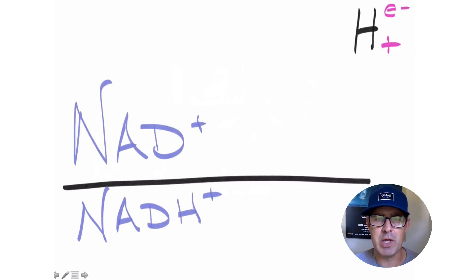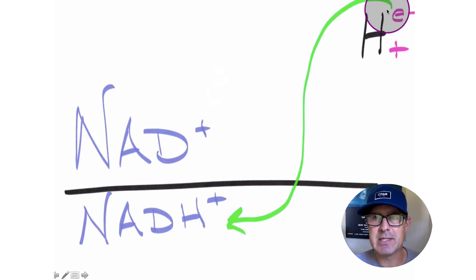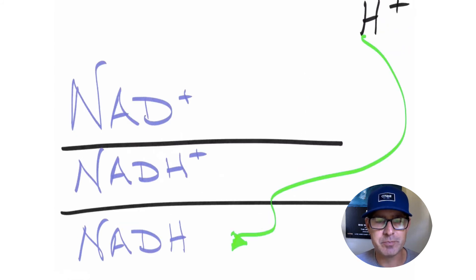We're left with one hydrogen atom with an electron and a proton. NADH+ can now grab that electron that's left on this hydrogen atom to cancel out that charge. So now we're left with NADH, which is the electron shuttle to the electron transport chain.